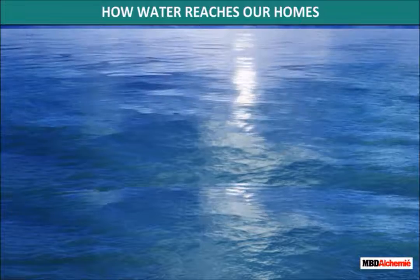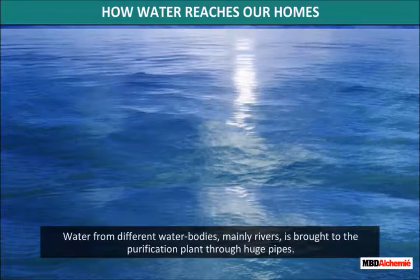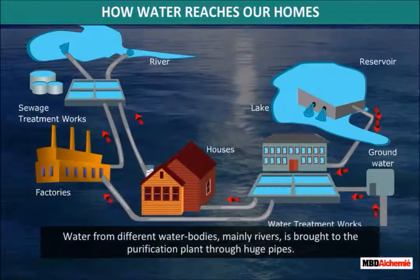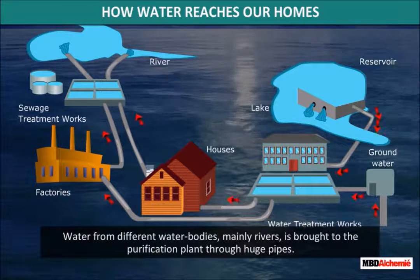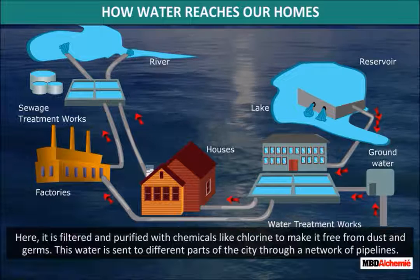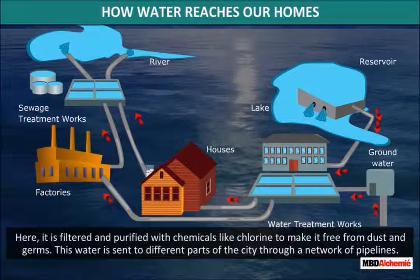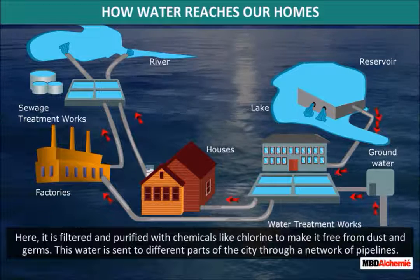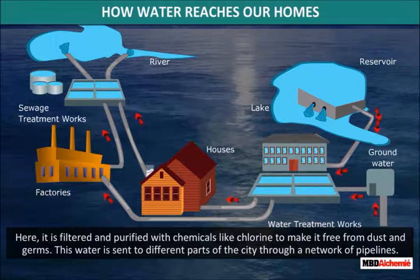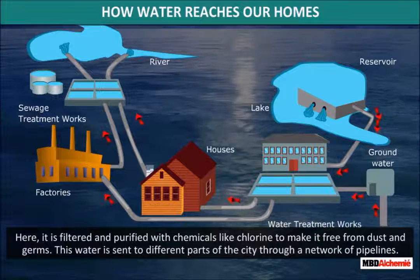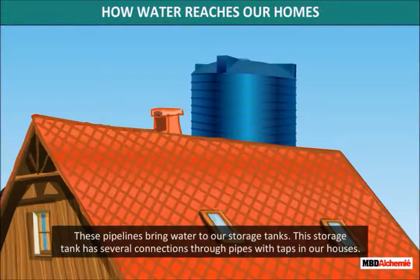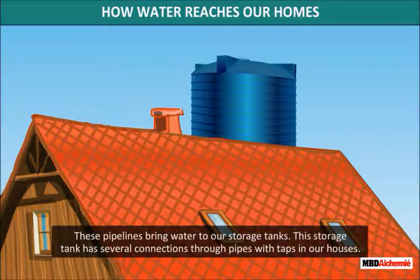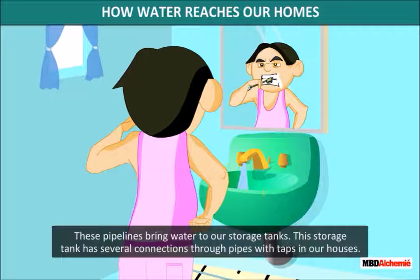How water reaches our homes: Water from different water bodies, mainly rivers, is brought to the purification plant through huge pipes. Here it is filtered and purified with chemicals like chlorine to make it free from dust and germs. This water is then sent to different parts of the city through a network of pipelines. These pipelines bring water to our storage tanks, which have several connections through pipes with taps in our houses.